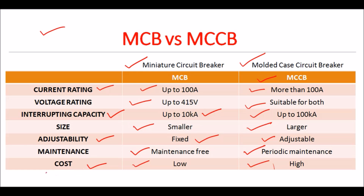Regarding usage, MCB is ideal for protecting individual circuits in homes and small commercial buildings, such as lighting and small appliance circuits. MCCB is ideal for protecting large electrical circuits such as industrial machinery, large HVAC systems, and main distribution boards. MCCB is mostly used for industries.